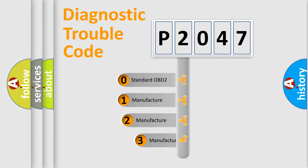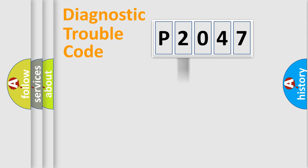If the second character is expressed as zero, it is a standardized error. In the case of numbers 1, 2, or 3, it is a more precise expression of the car-specific error.